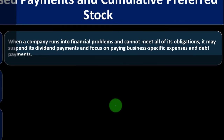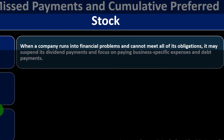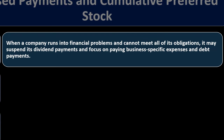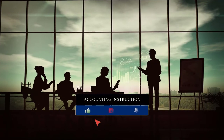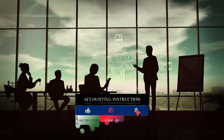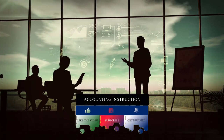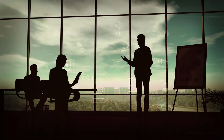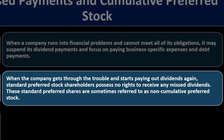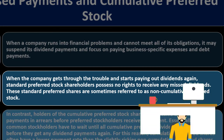When a company runs into financial problems and cannot meet all its obligations, it may suspend dividend payments and focus on paying business expenses and debt. They can say they're not going to pay preferred stock dividends — that looks bad, but they can do it. They cannot do that as easily with a bond because they would default on the contract. When the company recovers and starts paying dividends again, standard preferred stockholders have no rights to receive any missed dividends. These are sometimes referred to as non-cumulative preferred stock.